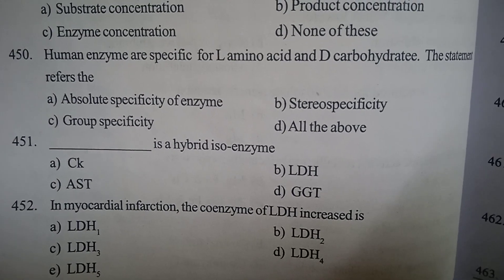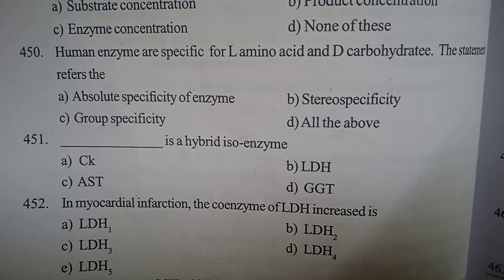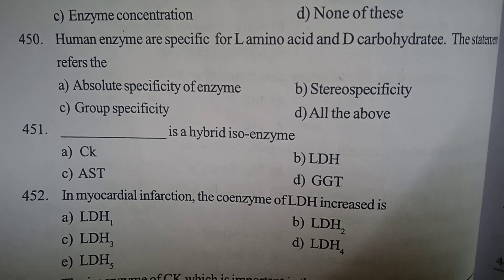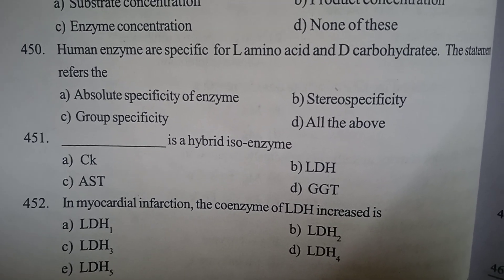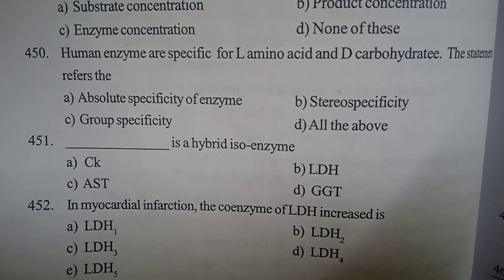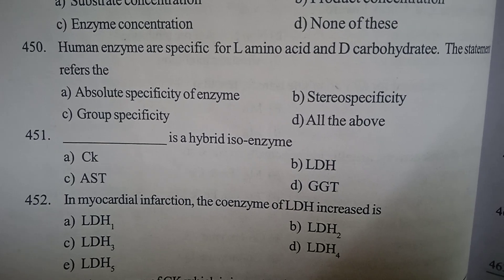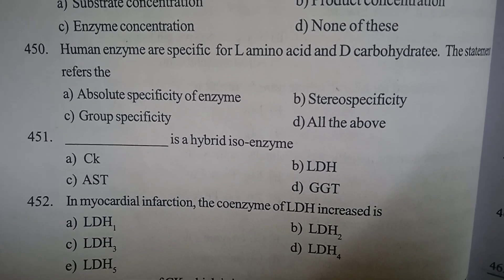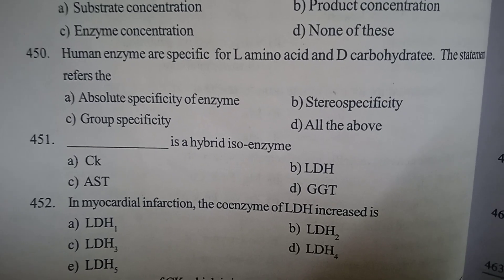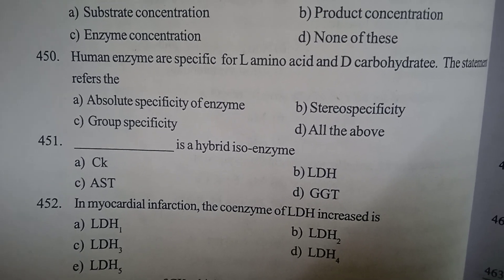Question 7: In myocardial infarction, the isoenzyme of LDH that is increased is — Option A: LDH1, Option B: LDH2, Option C: LDH3, Option D: LDH4, Option E: LDH5. Correct answer: In MI, LDH1 is increased. Correct answer: Option A, LDH1.